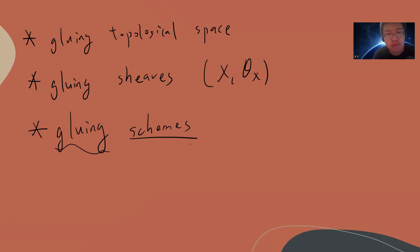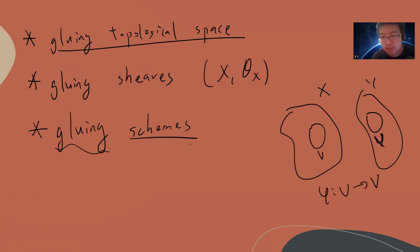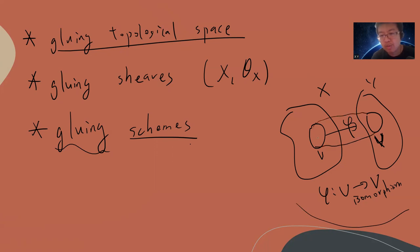Gluing a topological space is something everybody knows. For example, for X and Y — let's just take two — you take some open set U in X and some open set V in Y, and there's a map phi such that U and V are homeomorphic. Then you can create a topological space by identifying every point in U with the corresponding point in V via this morphism.